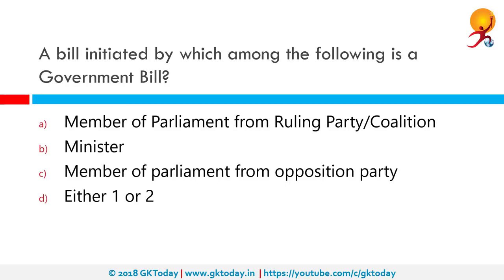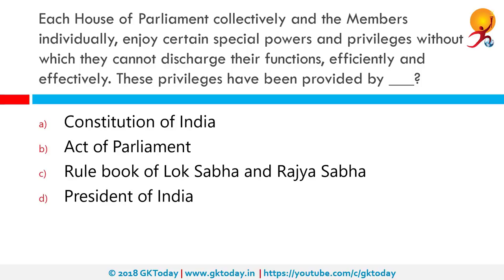A bill initiated by which among the following is a government bill? If a bill is introduced in the House by a minister, it is a government bill or public bill. If the bill is introduced by any other member than a minister, it is called a private member bill, which can be introduced by both ruling party and opposition MPs. Each House of Parliament collectively and members individually enjoy certain powers and privileges, provided by the Constitution.